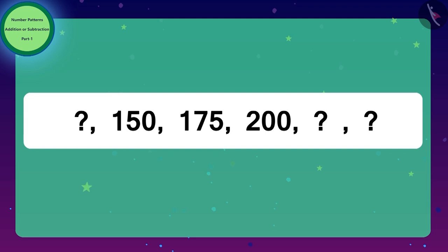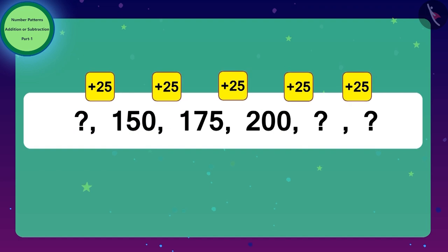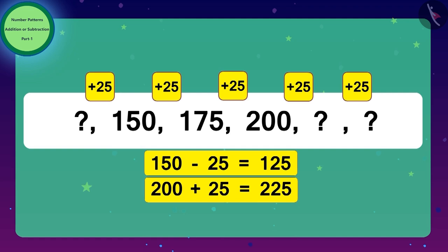Yes children, you have identified this pattern correctly. Here, to get the next number we will have to add 25 to the previous number. Similarly, to get the first number, 25 has to be subtracted from the second number. Once you understand the pattern, then you can easily write the next number to complete the pattern. Like this, we can complete this pattern.